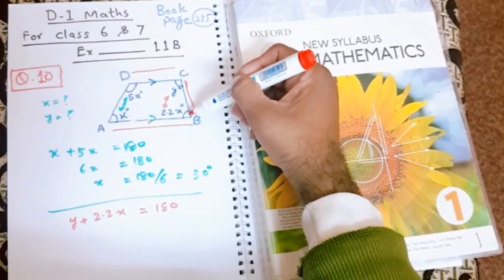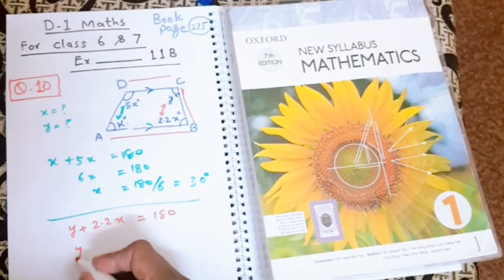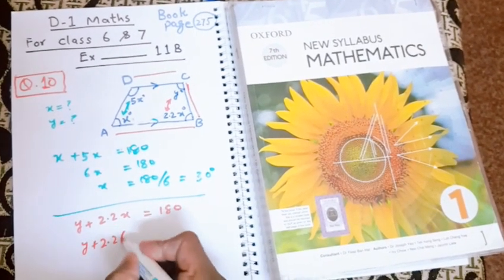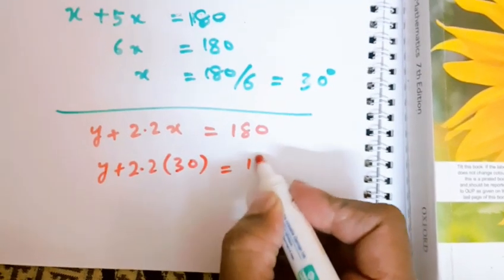AB and BC were parallel, so a line which was passing through both of these two parallel lines was BC, and that line was making angle y and 2.2x degrees. That's why the sum of both of these two will be equal to 180 degrees.